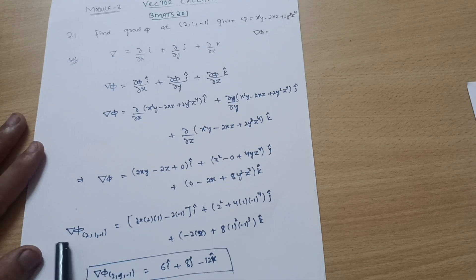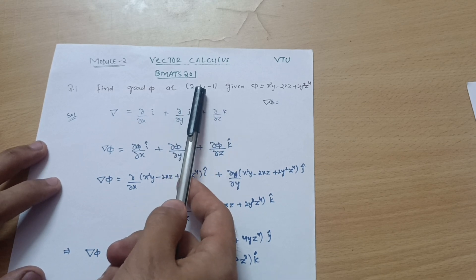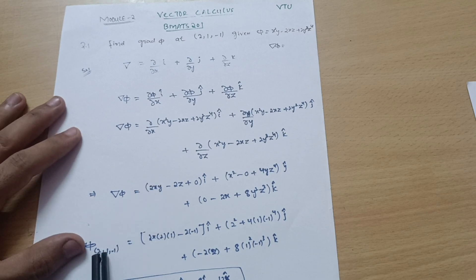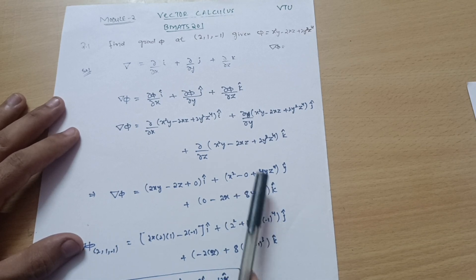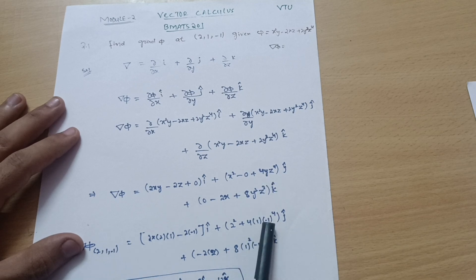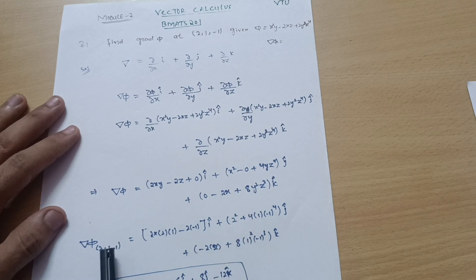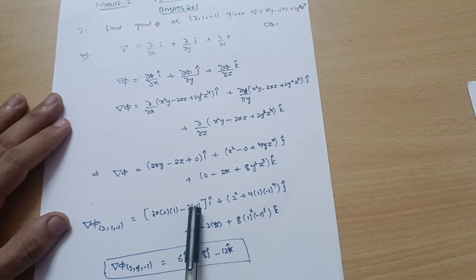Now substituting the point (2, 1, -1): x = 2, y = 1, z = -1. For the i-cap term: 2(2)(1) - 2(-1) = 4 + 2 = 6 i-cap. For the j-cap term: (2)² + 4(1)(-1)⁴ = 4 + 4(1)(1) = 4 + 4 = 8 j-cap. For the k-cap term: -2(2) + 8(1)²(-1)³ = -4 + 8(1)(-1) = -4 - 8.